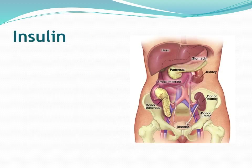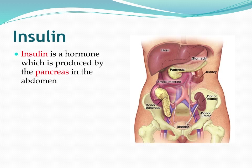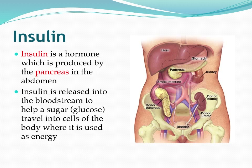Both type 1 and type 2 diabetes are associated with insulin. Insulin is simply a hormone produced by the pancreas, which is located in the abdomen right below the liver and the stomach. Insulin is released into the bloodstream to help convert the sugars or glucose in the foods we eat into energy.